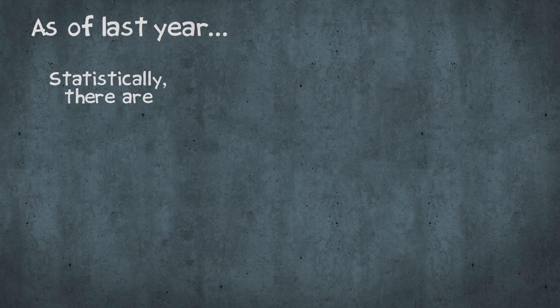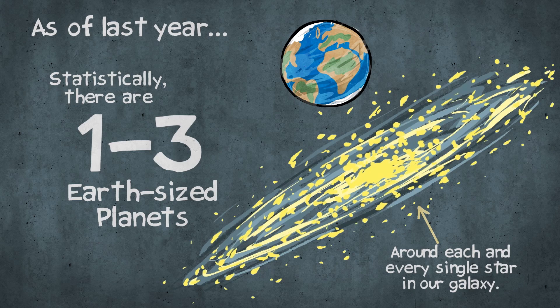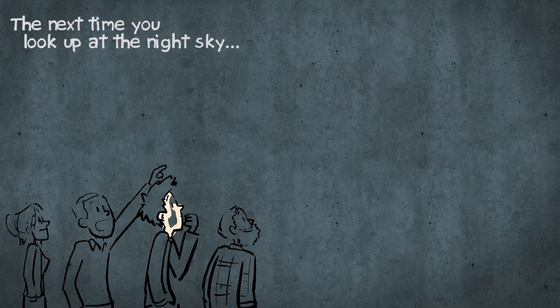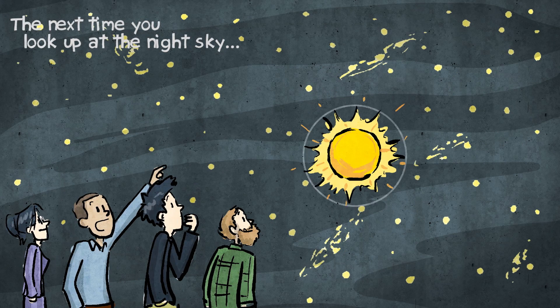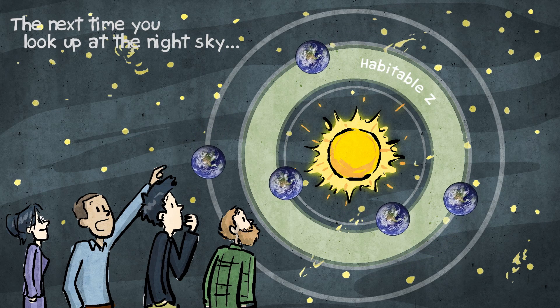As of last year, from a statistical standpoint, we now know that there are one to three Earth-sized planets, or smaller, around each and every star in the galaxy. The next time you go outside and look up at the night sky, just pick a random star. Planet. Planet. Two of them probably. Probably five. Five planets, one of them sitting in the habitable zone.